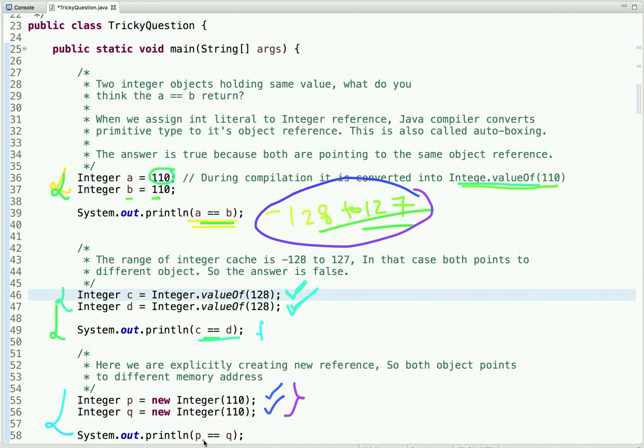But here we are explicitly creating the integer object. So this will not come into this picture. So when we compare P equal to equal to Q, so it is false as both P and Q variable points to different memory address. So now this is the explanation of the following outputs. And I hope you get the clarity of why the output is true, false and false.